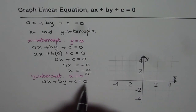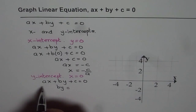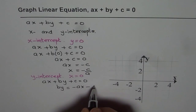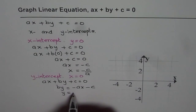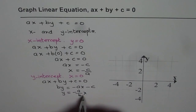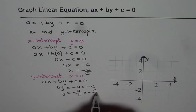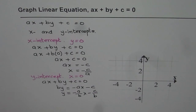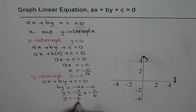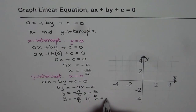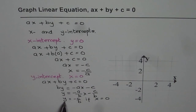When we reorganize, we can say B times Y equals to minus AX minus C. So Y equals to minus A over B times X minus C over B. If X is 0, then Y equals to minus C over B. So the value of Y will equal minus C over B when X equals to 0. That gives us the value of the Y intercept.